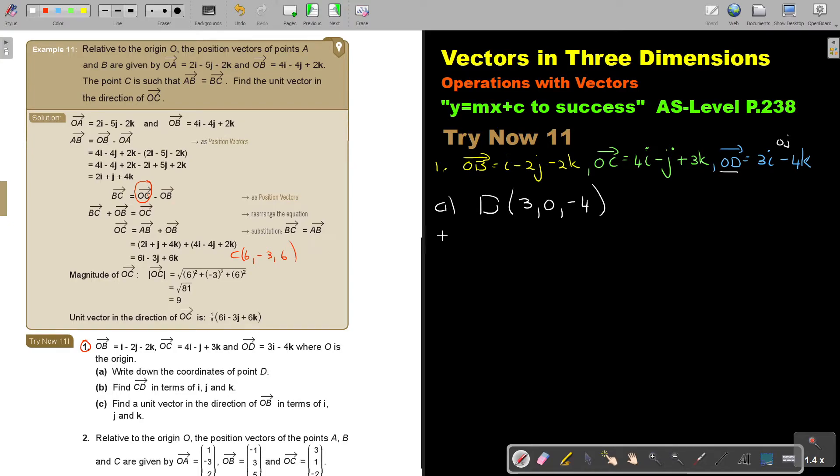Let's go on to Number B: Find CD. Remember, CD in terms of position vectors is very important, it's a very helpful tool. It's the second one minus the first one. So what is OD?